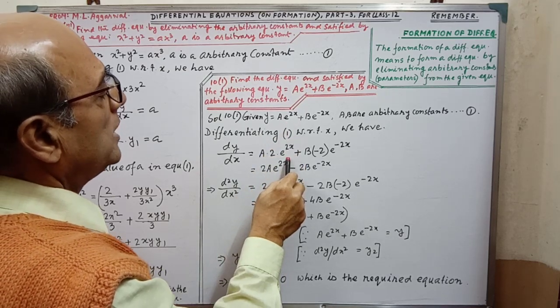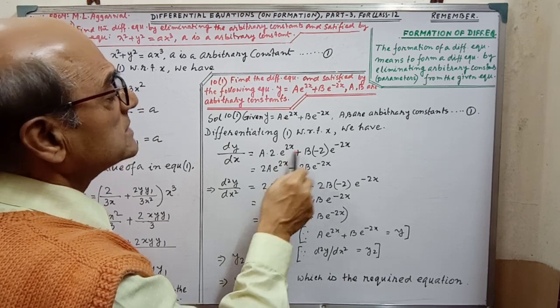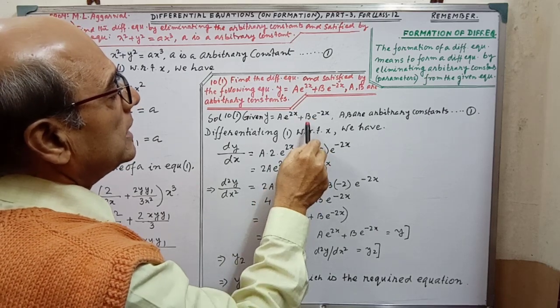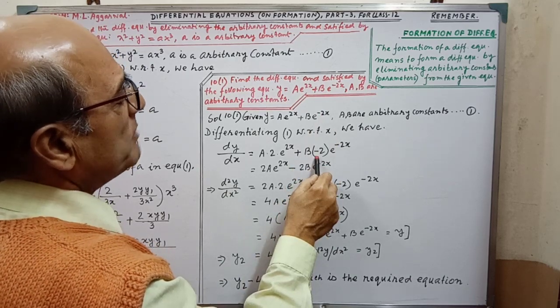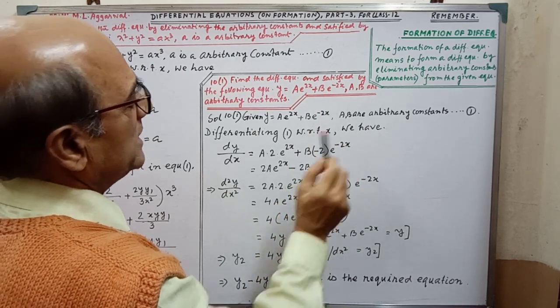Differentiating of this, that is 2 e to the power 2x. Simply, same thing here we have to do. That is b constant and this is the minus minus 2 into e to the power minus 2x.